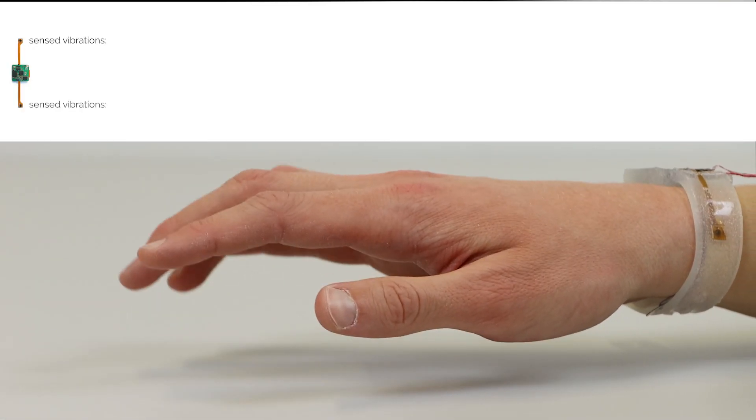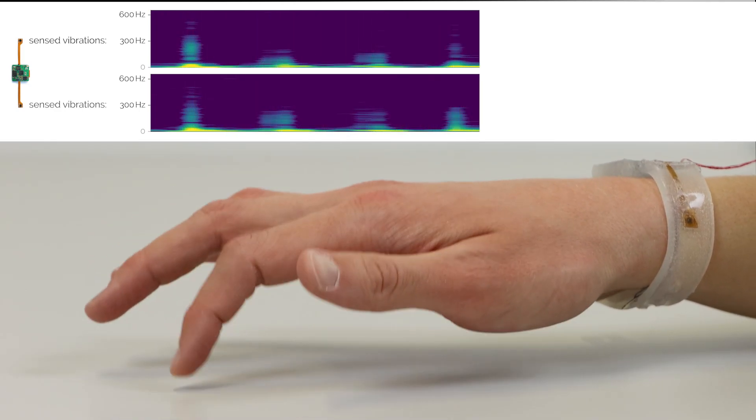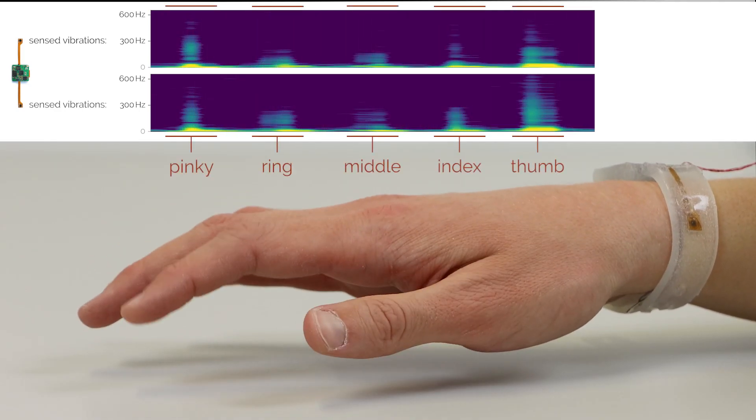TapID not only reliably detects rapid-touch events on the surface but also robustly identifies the finger used for touch input through a machine learning classifier.